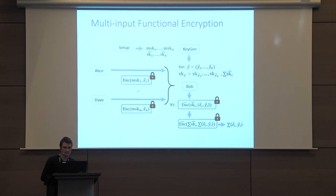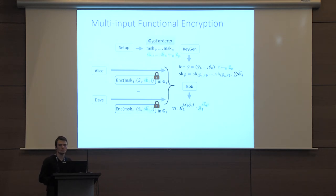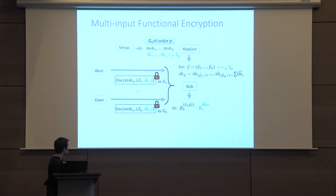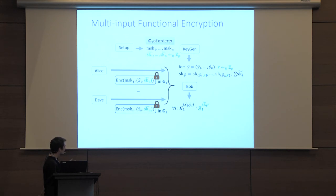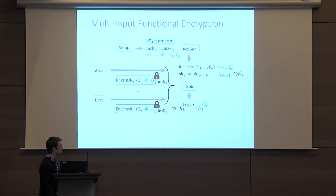How do we implement this idea? We use a particular single-input FE — the one from Agrawal-Libersele. The encryption will be the single-input FE encryption of Agrawal-Libersele, but not of xi alone — rather of the vector xi augmented by one dimension, where we add the value sk_tilde_i. We don't simply encrypt xi; we augment the dimension by one. We also augment the dimension of the vector yi by one. The key generation picks a fresh random scalar r for each key generation call, and the secret key is for this extended vector.